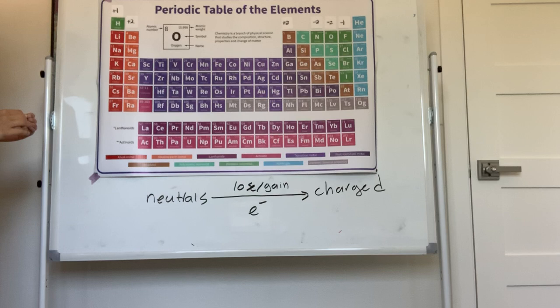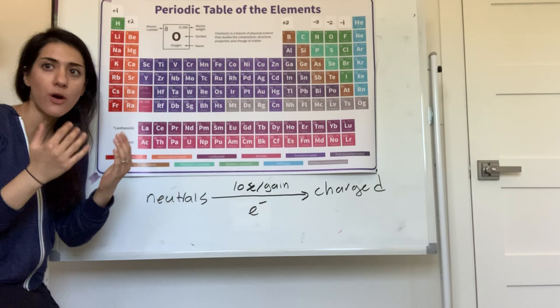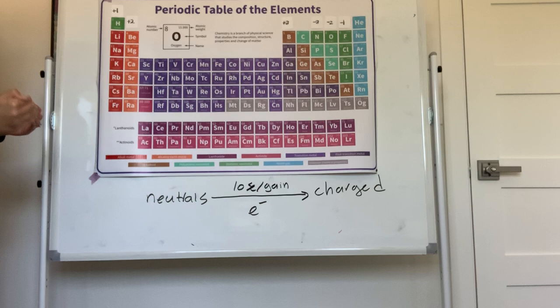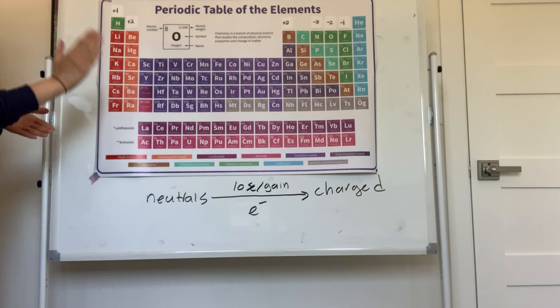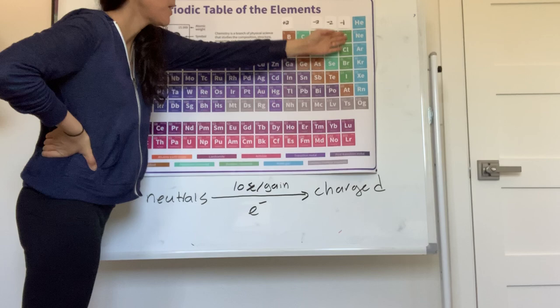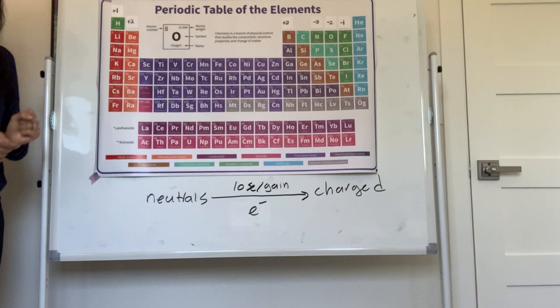Let's review. Elements are neutral by themselves, but when they form compounds, they lose or gain electrons. Group 1A: +1. Group 2A: +2. Group 3A: +3. Halogens: −1. Oxygen group: −2. Nitrogen group: −3. The metals lose electrons, the non-metals gain electrons. How many? Based on where they are on the periodic table.